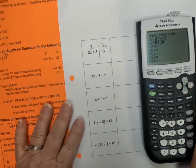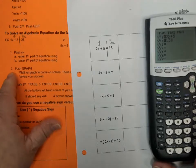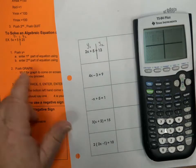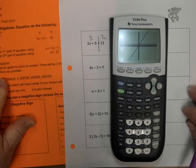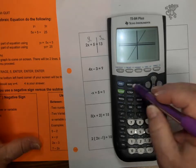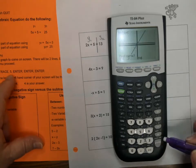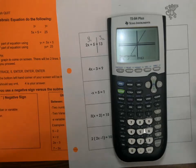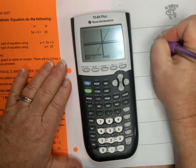Our next step, and you're going to refer to this for a while, it says push graph. So, step number two is push graph, which is this key right up here, push graph. You have to wait for two lines to come across. Then it says, push the third step, push second, trace, 5, enter, enter, enter. And at the bottom of the screen, we get X is equal to 4. So, our answer is X is equal to 4.